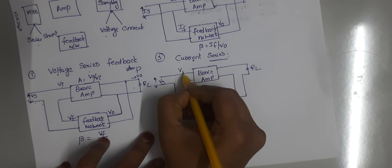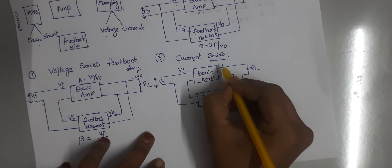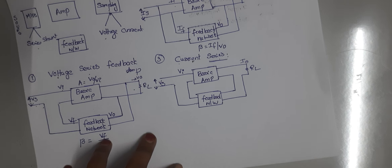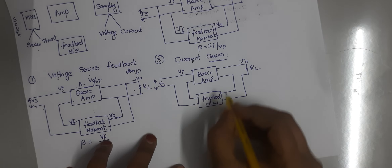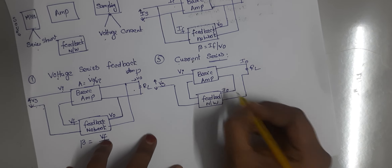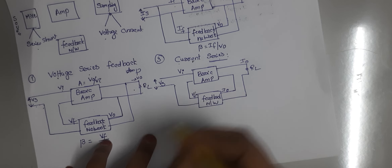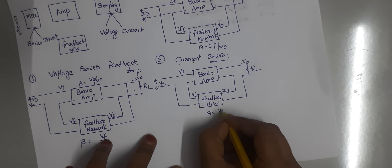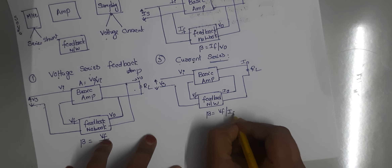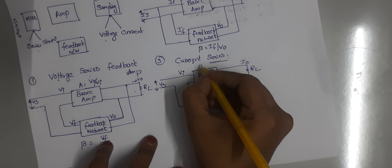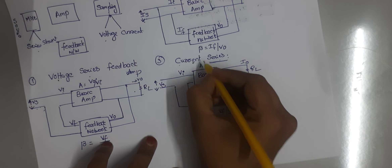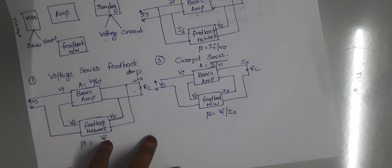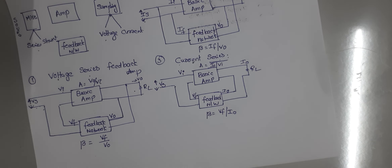The output for current sampling should be I0. The output of the feedback network is Vf. So beta is equal to Vf divided by I0, and A is equal to I0 divided by Vi. This is the current series feedback amplifier.